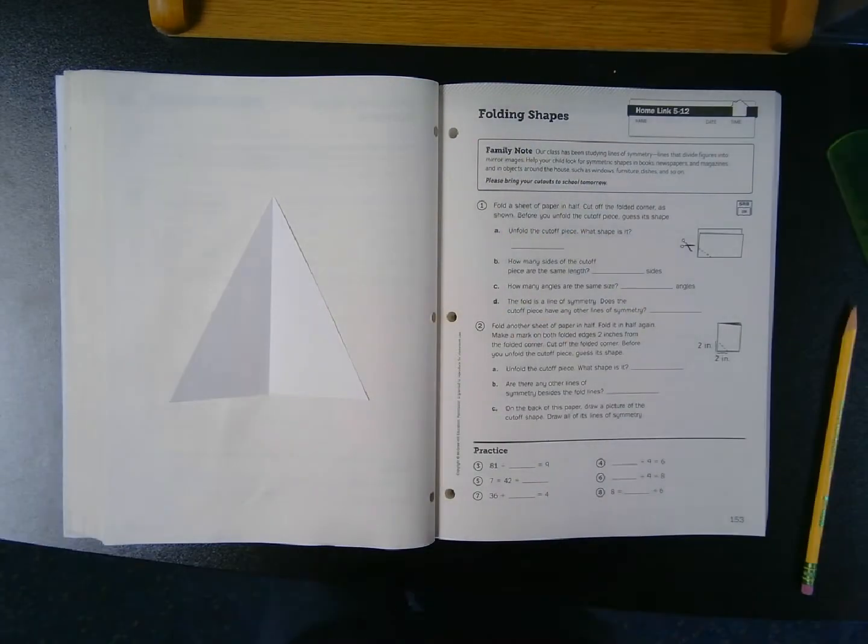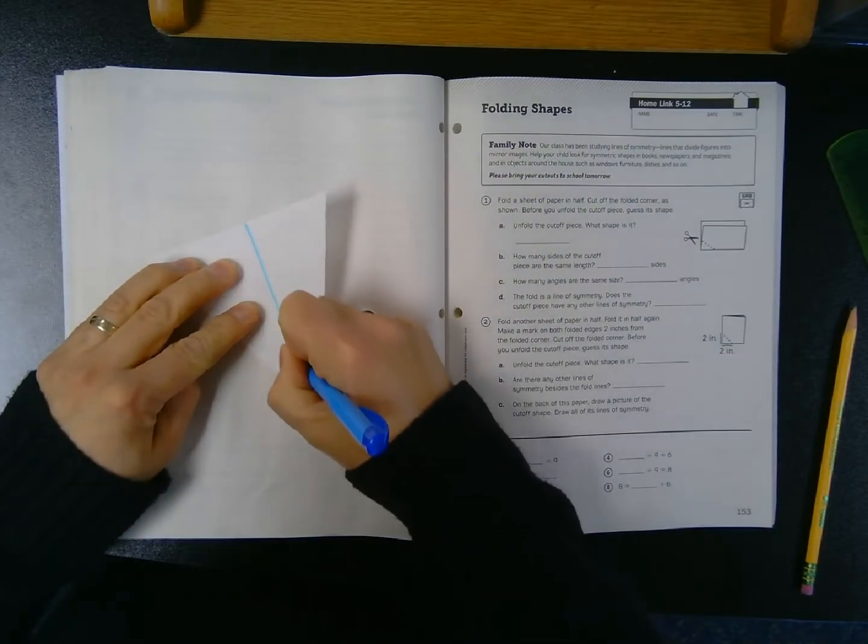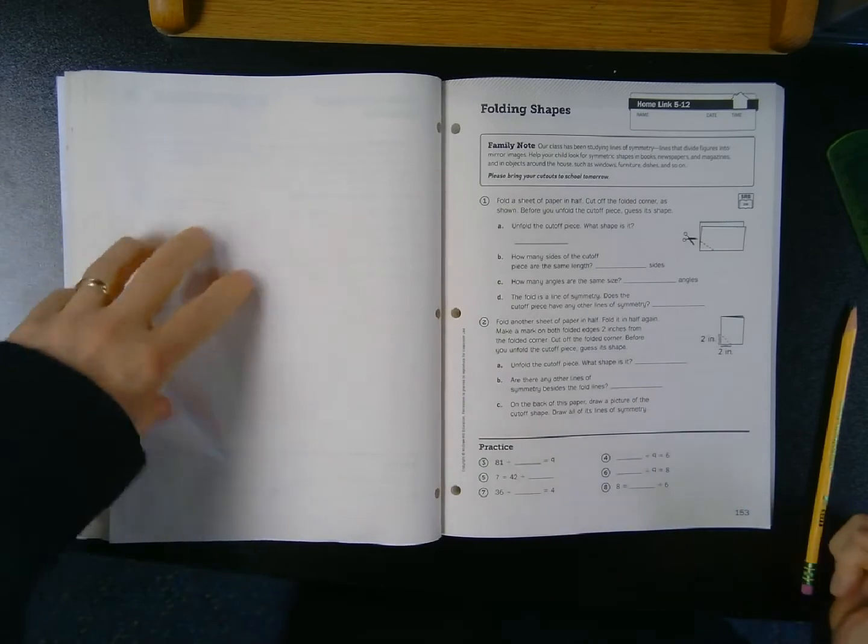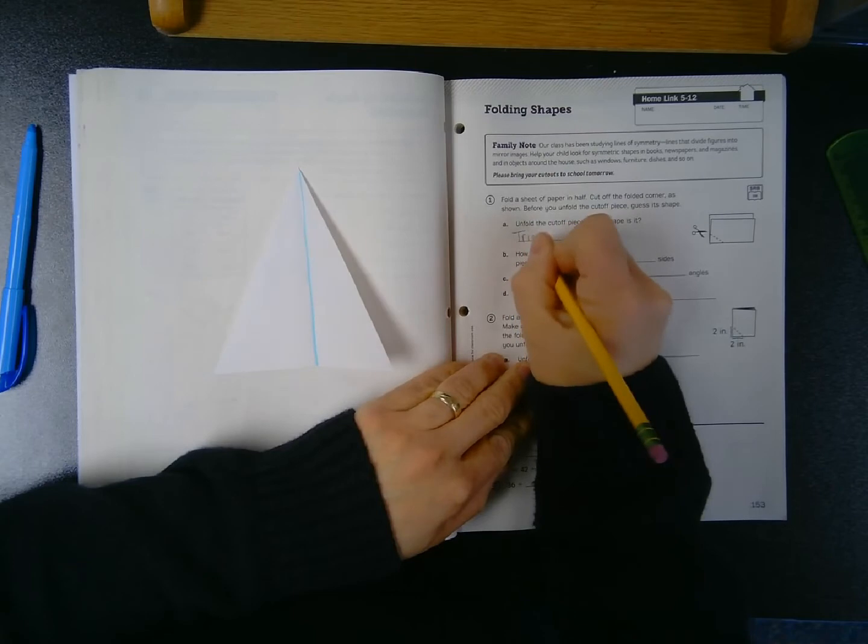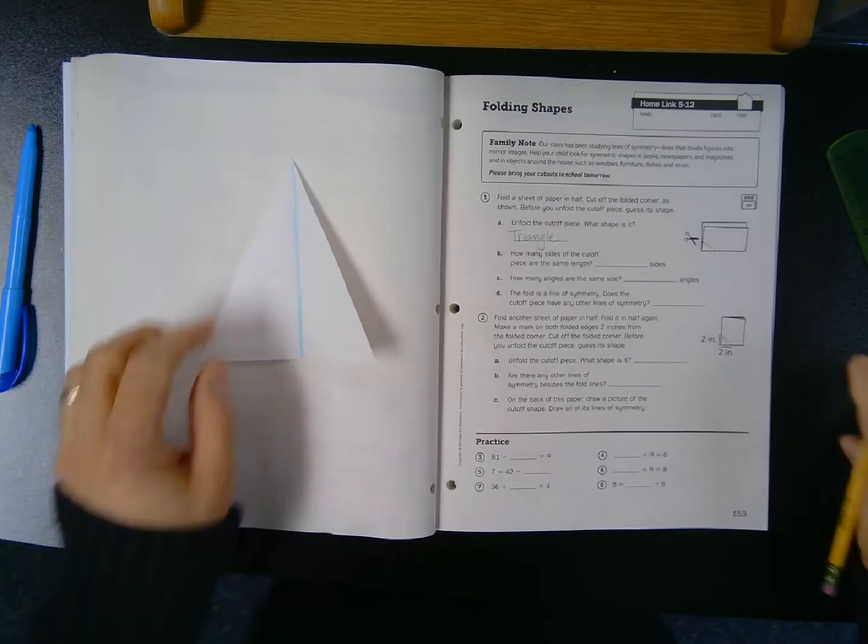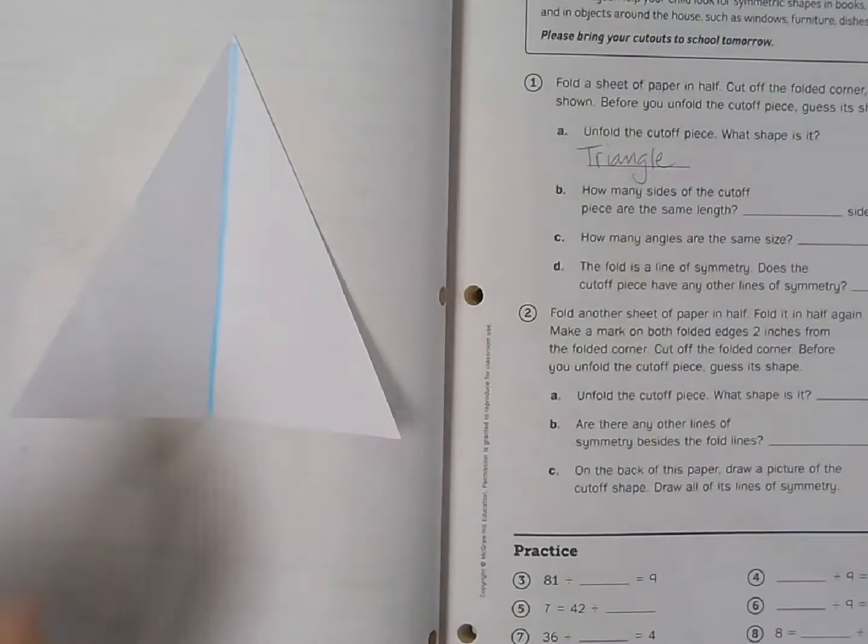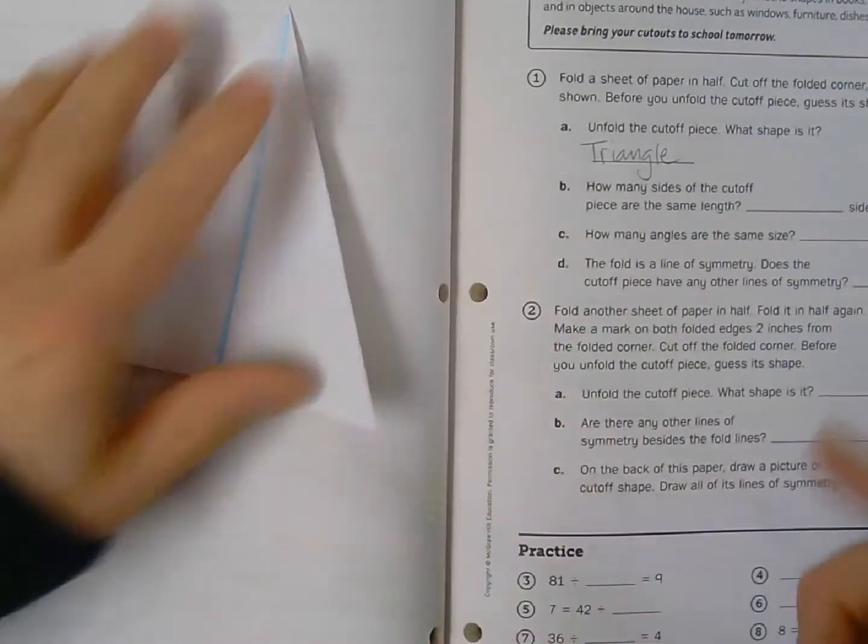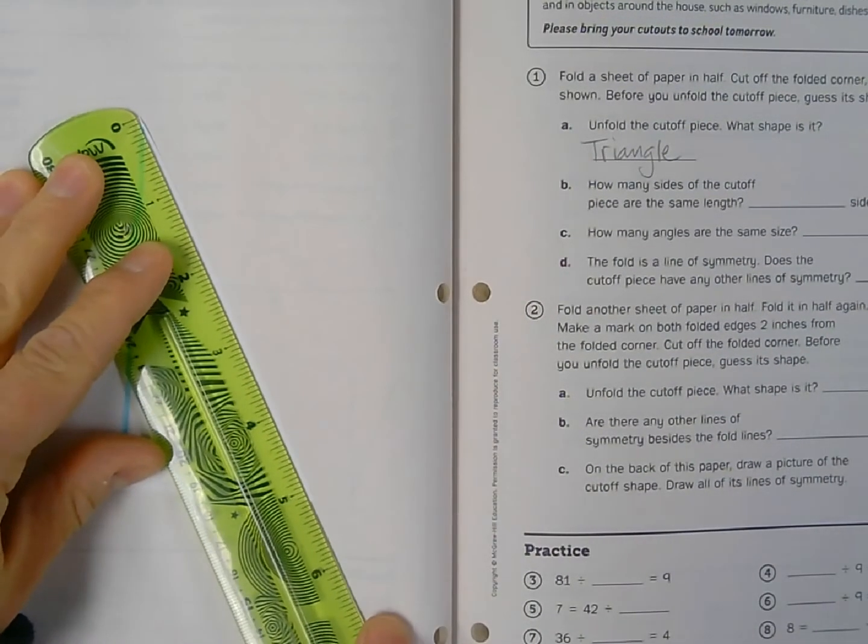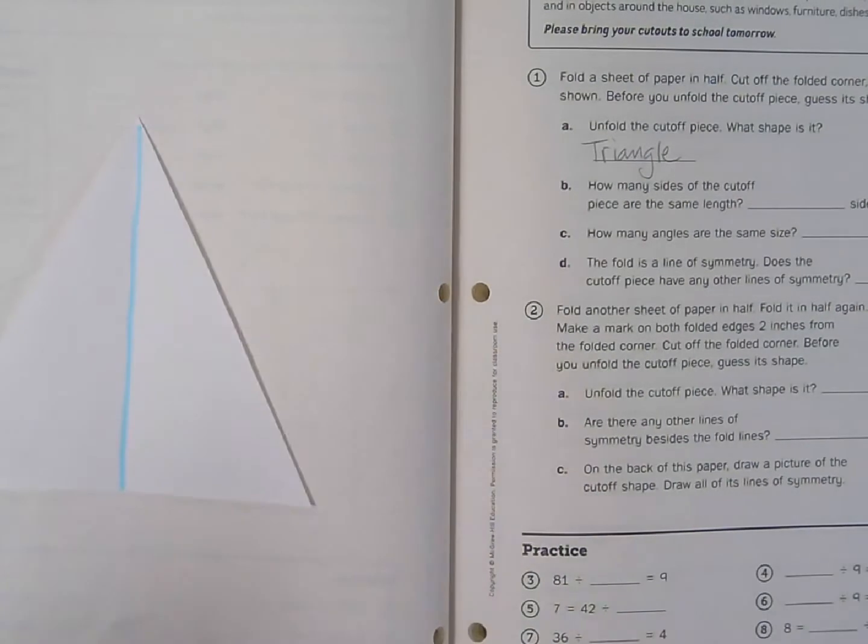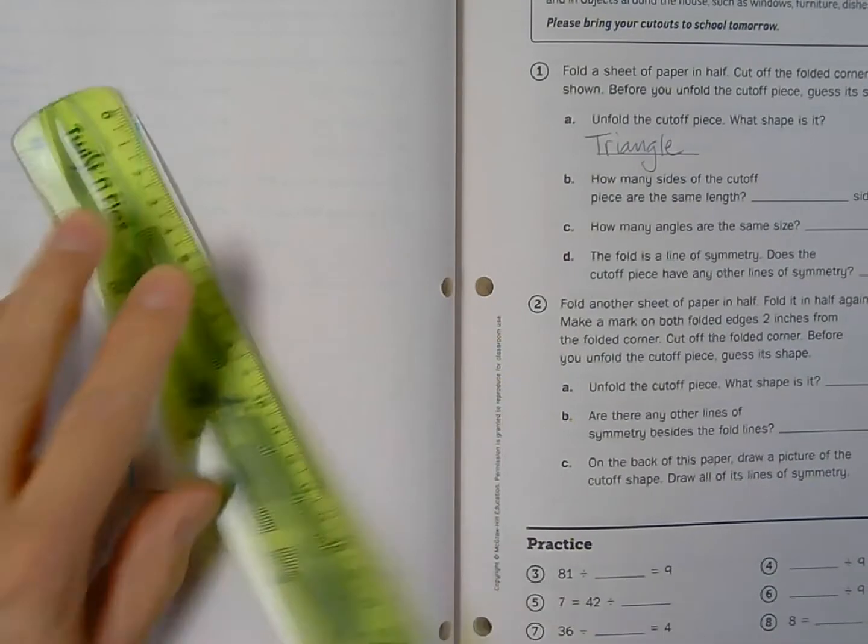And I'm just going to take a highlighter, and I'm just going to mark a line of symmetry here, so it's easier to see on the camera. So I know now that I have a triangle. How many sides of the cutoff piece are the same length? This is where my ruler is going to come in handy. So I'm going to measure one side. And it looks like just a little about, a little over five inches, five and a quarter, or I could measure it using the metric side, and it's about 13 and a half centimeters.